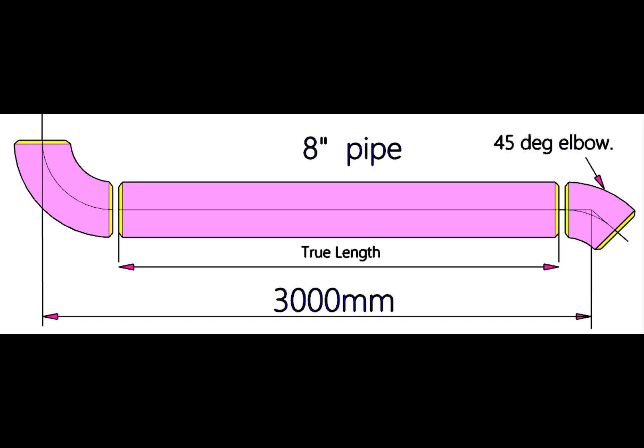To calculate the take off of 45 degree elbow, multiply the diameter in inches with 0.4142.